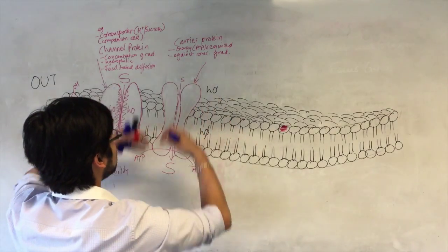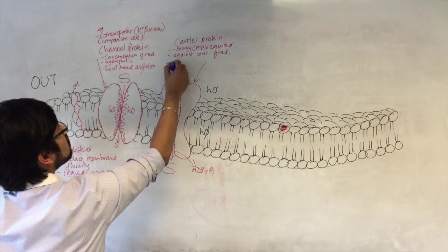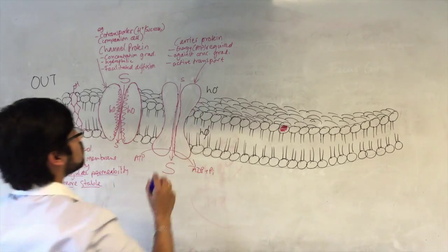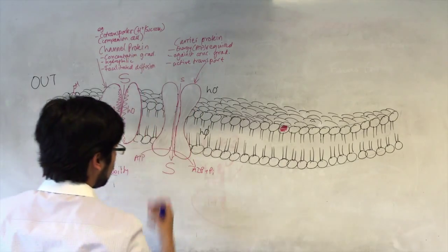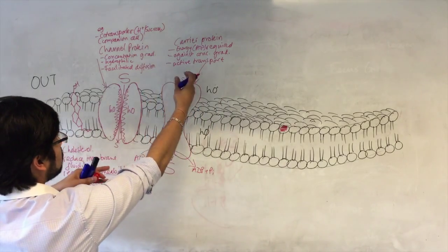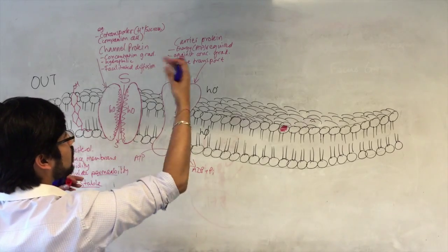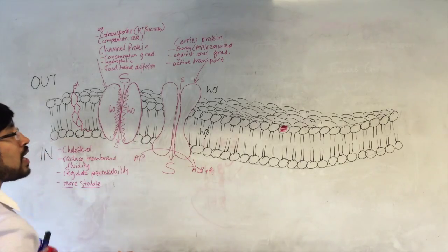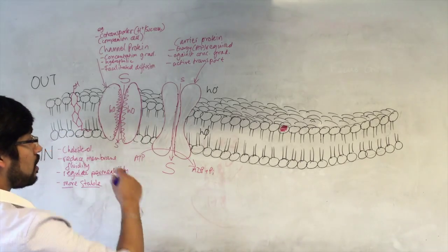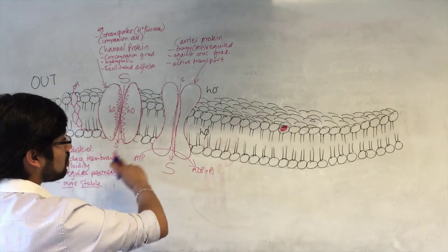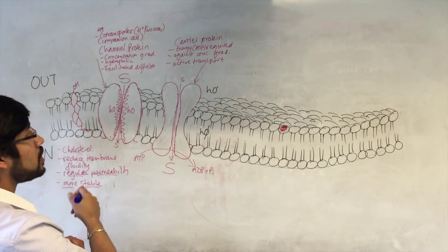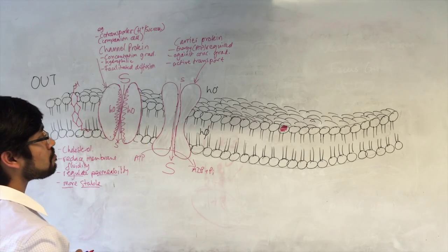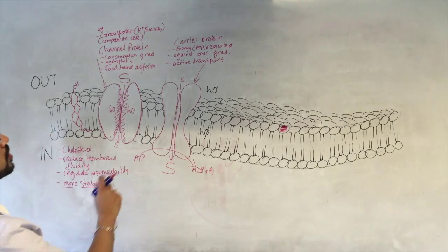Whenever things are being moved from outside to inside or inside to outside against the concentration gradient, you'll need energy to do that. And these proteins allow that to occur. They can use the energy from the breakdown of ATP to undergo conformation changes that move things against concentration gradient. Those are carrier proteins. You might even see them referred to as pumps.